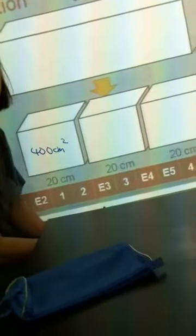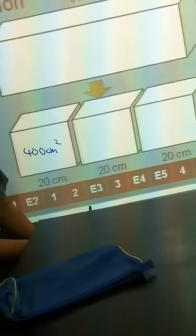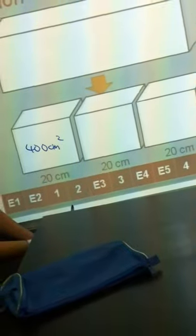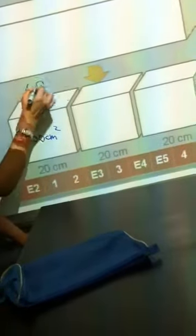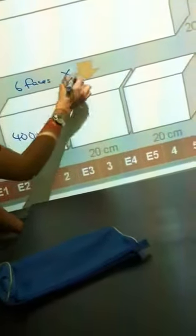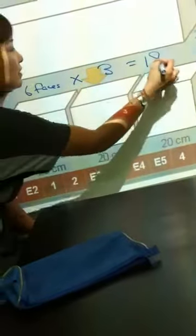Perfect. Who can do 400 times 18 very fast? Not me. Because this is 6 faces times 3 cubes. So all together that should be 18 faces.